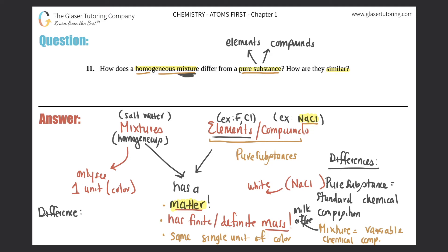Another difference is that mixtures can be separated by physical means — physical experimentation. However, pure substances cannot be separated by physical properties. Elements cannot be separated at all, and compounds can only be separated by chemical experiments.